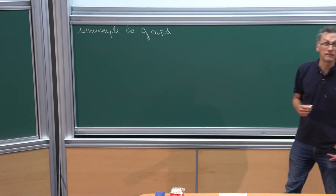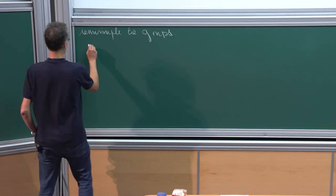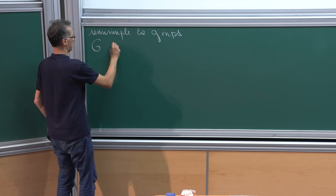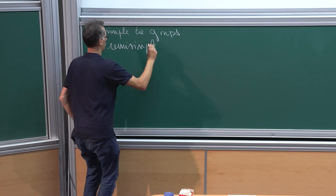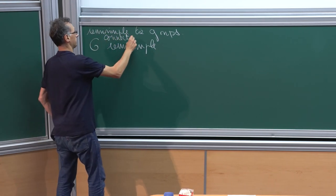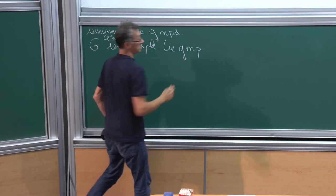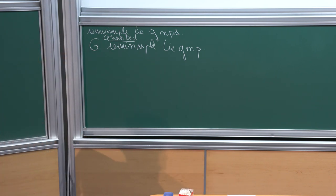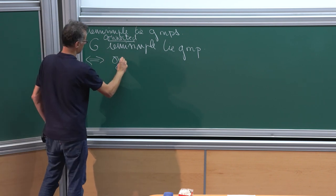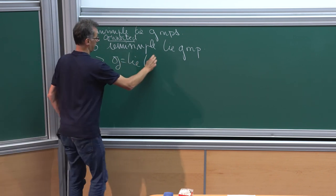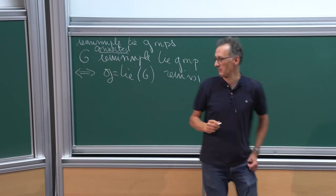The first question is: what is a semi-simple Lie group? In this lecture, G will always be a connected semi-simple Lie group. So the answer is that it means that the Lie algebra of G is semi-simple, which is not a very satisfactory answer.